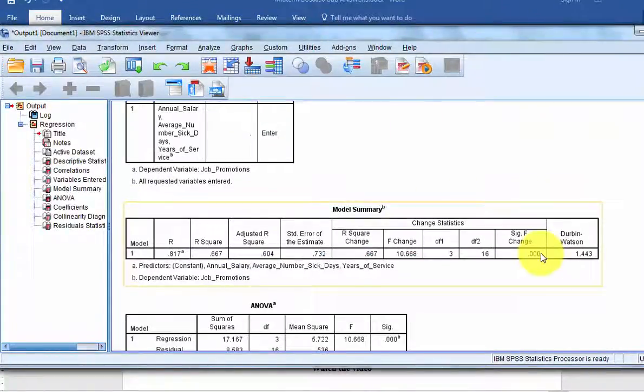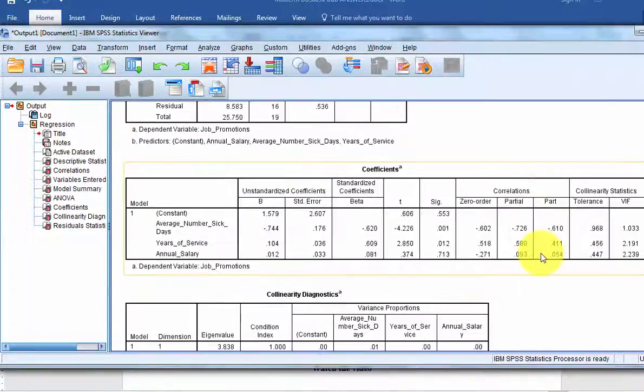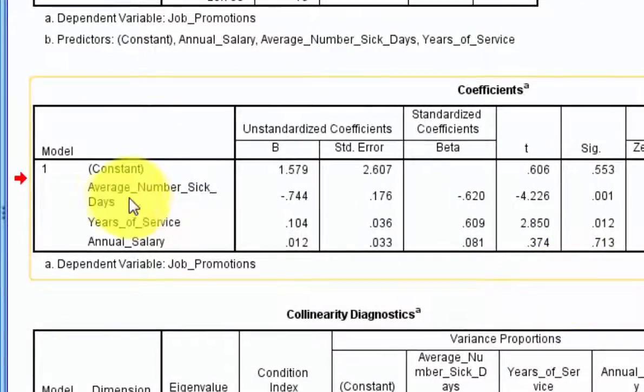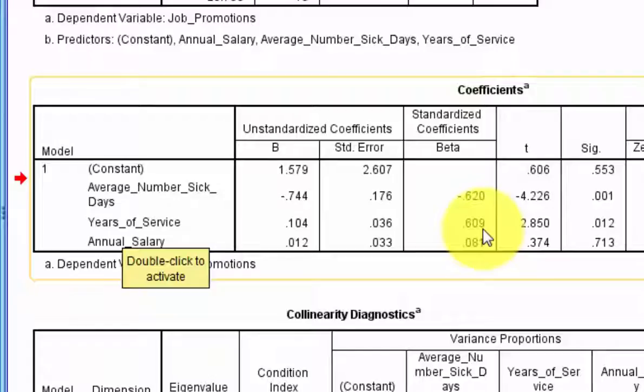So the only reason we're doing this is to see which one of the predictors is stronger. That means we've got to go to the coefficients box. So here's sick days. It is significant. We look at the beta weight. So negative 0.62. So it means the less sick days a person has, the more promotions. That's interesting. Years of service is a positive six. So the longer you've been there, the more promotions you should have. But the one that's a little bit more powerful is the number of sick days. That's going to be your strongest predictor.